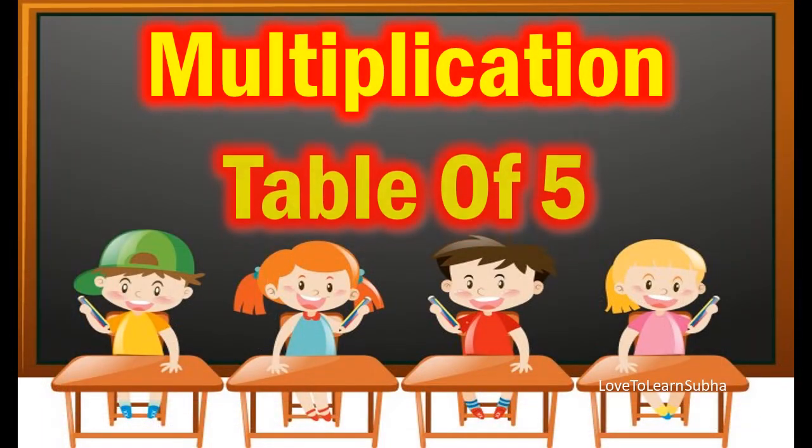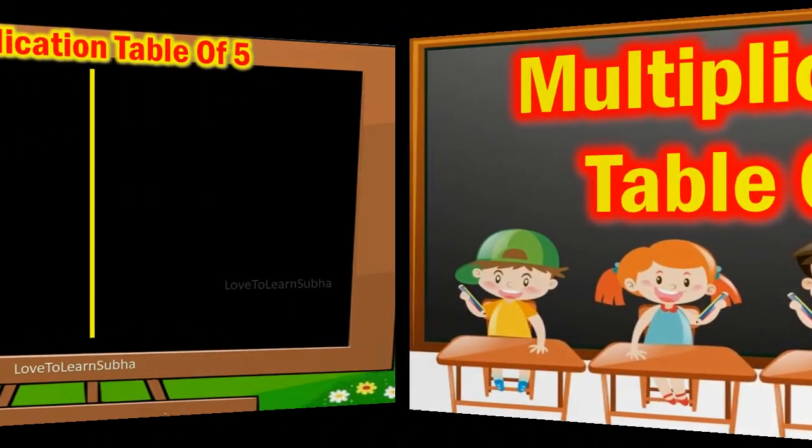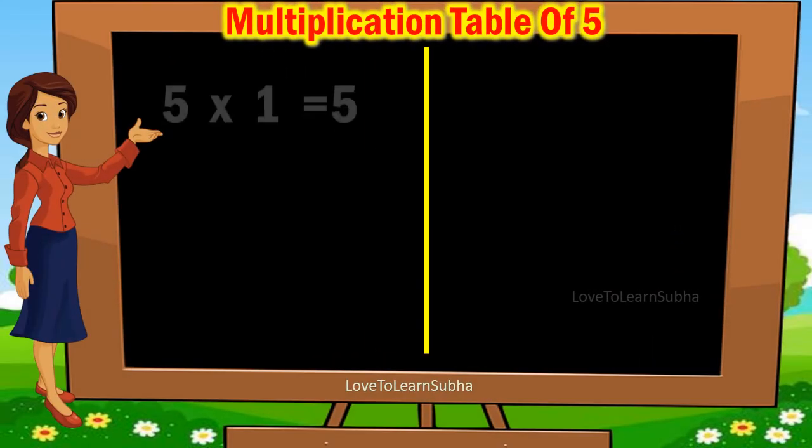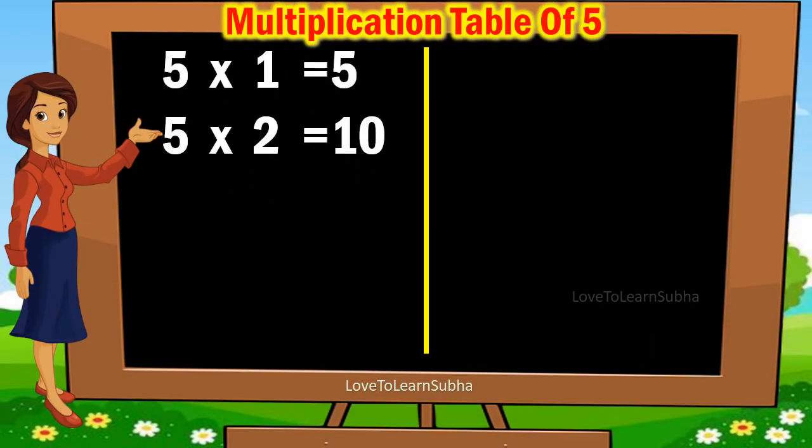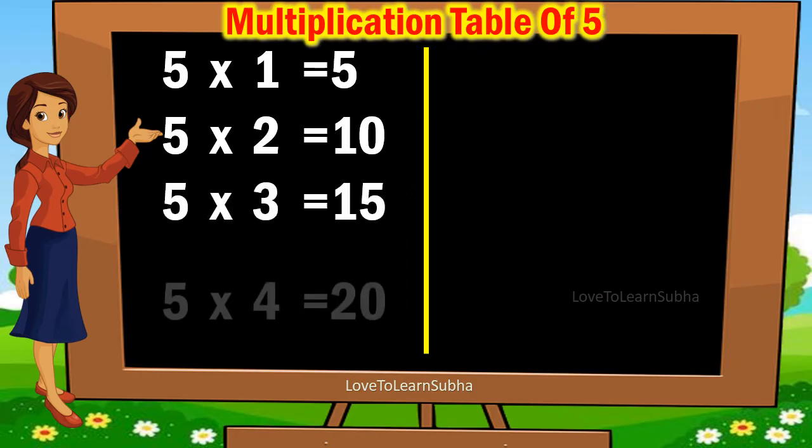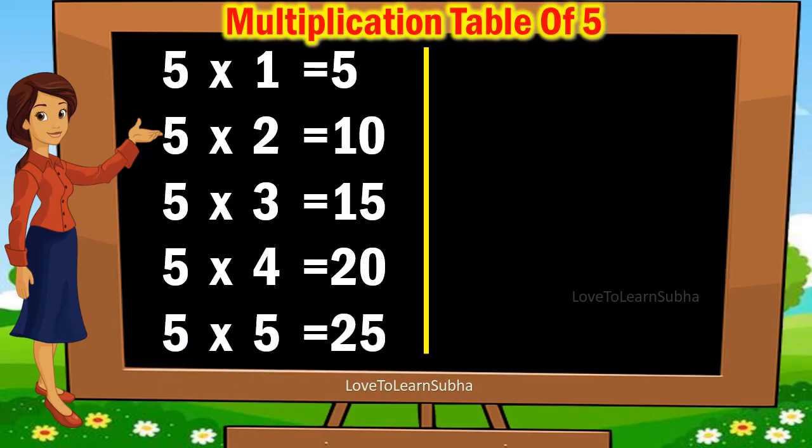Multiplication table of 5: 5 ones are 5, 5 twos are 10, 5 threes are 15, 5 fours are 20, 5 fives are 25.